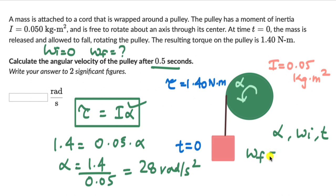The final angular velocity equals the initial angular velocity plus alpha into T. Initial angular velocity is 0, alpha is 28, and T is 0.5. So omega F comes out to be 28 into 0.5, which is 14 radians per second.